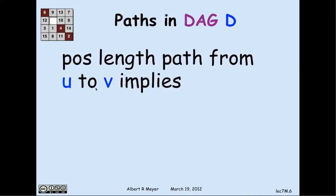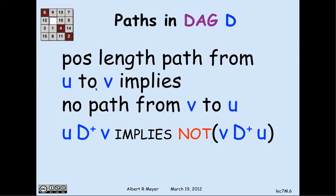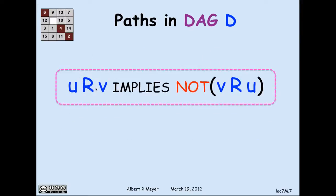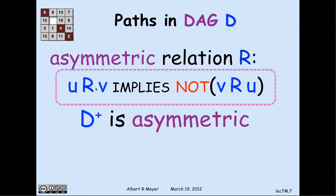If we look at directed acyclic graphs, if there's a positive length path from a vertex u to a vertex v, then since there are no cycles in a directed acyclic graph, there can't be a path back from v to u. That property is called asymmetry. D-plus — the positive path relation — in a DAG has this asymmetry property: if u can get to v by a positive length path, it's not possible for v to get back to u by a positive length path. Abstracted: u R v implies not v R u. D-plus is asymmetric in a graph without cycles.